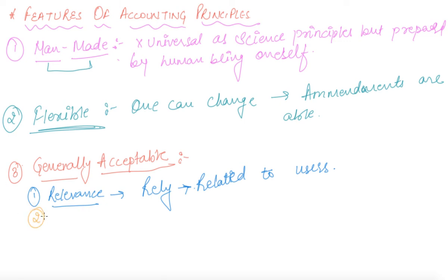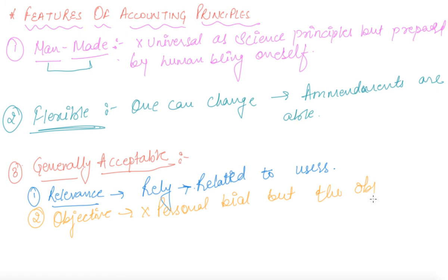The next acceptable condition is that it should be objective — that is, it should not be linked with personal bias, but with the objective or purpose for which one started the business.